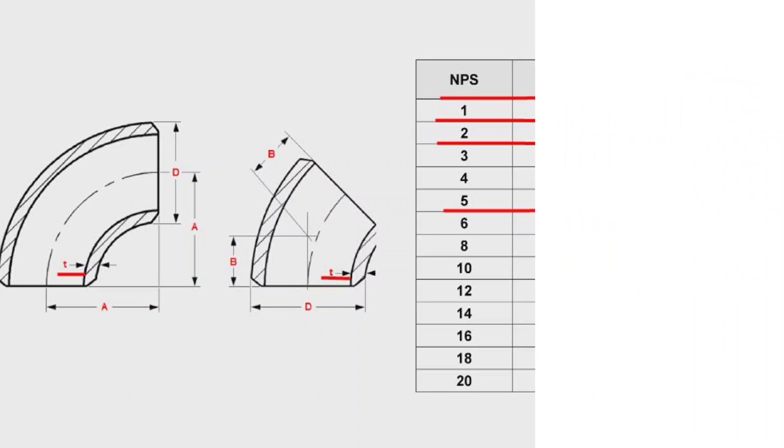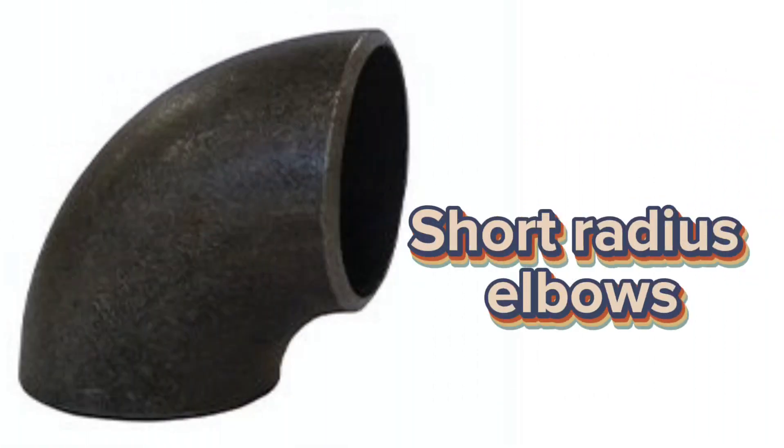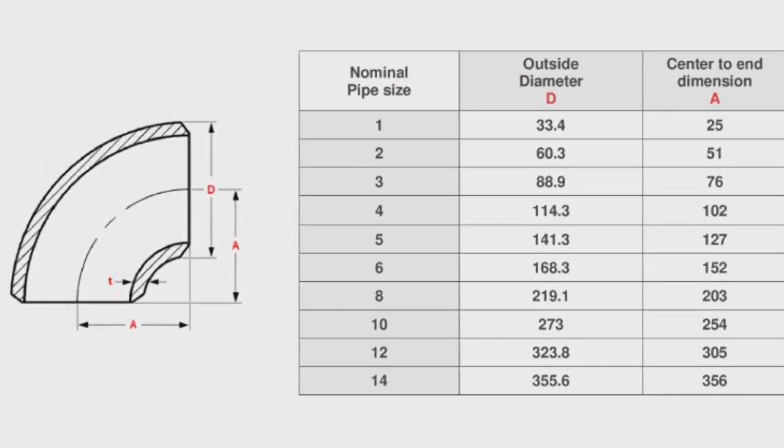Let's look at the dimensions of short radius elbows. Here is the same as in the size table of long radius elbows. Nominal pipe size is the same. Outside diameter is the same. Center to end dimension is different.